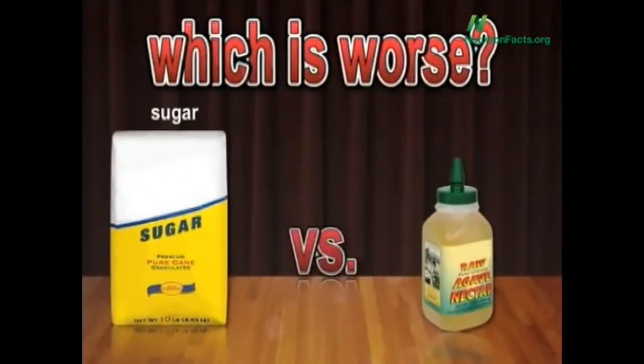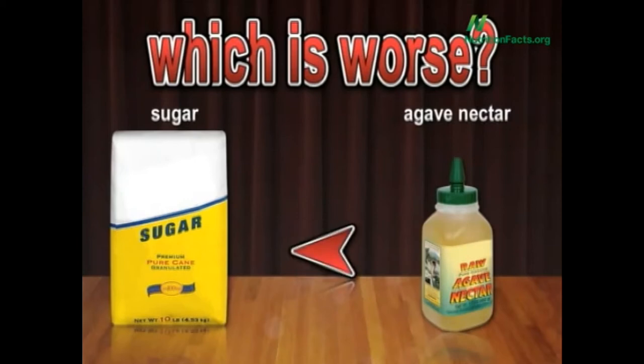Should we start with an easy one to launch us off? Table sugar versus raw, pure, organic agave nectar. Which is worse? Does sugar have less nutrition, or does agave nectar have less nutrition? Or do they both have the same? Remember how I asked if we should start out with an easy one? Well, I guess the answer is no. They both have exactly the same nutrition, which is to say, basically none.